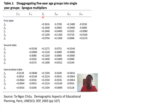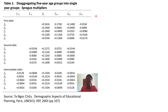These numbers represent the following: F zero represents the group under consideration — the age group under consideration. F minus one and F minus two are the two age groups before the group you are considering; these are called the preceding groups. Then F plus one, F plus two, and F plus three are called the following groups. Going through the table, you have table one, the second table, and the intermediate table.